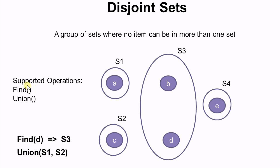Disjoint sets support at least two operations: find and union, which is also known as the find-union algorithm. Find takes one item as a parameter and returns the disjoint set that item belongs to. So find(D) will return S3, because D is an element in S3.